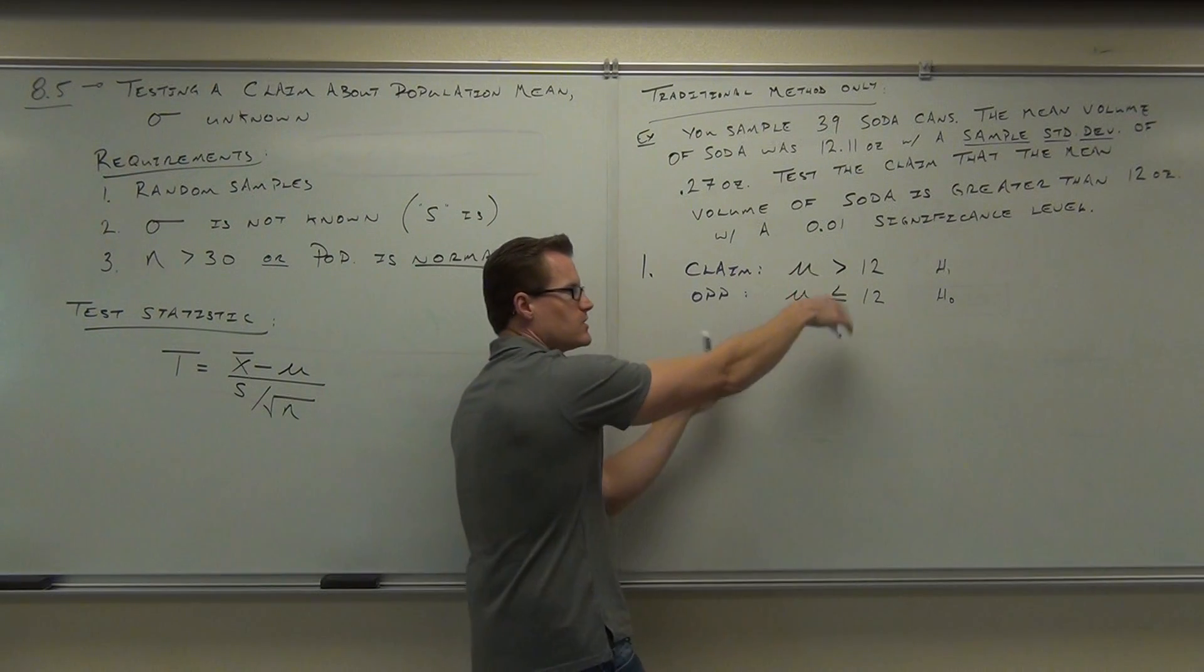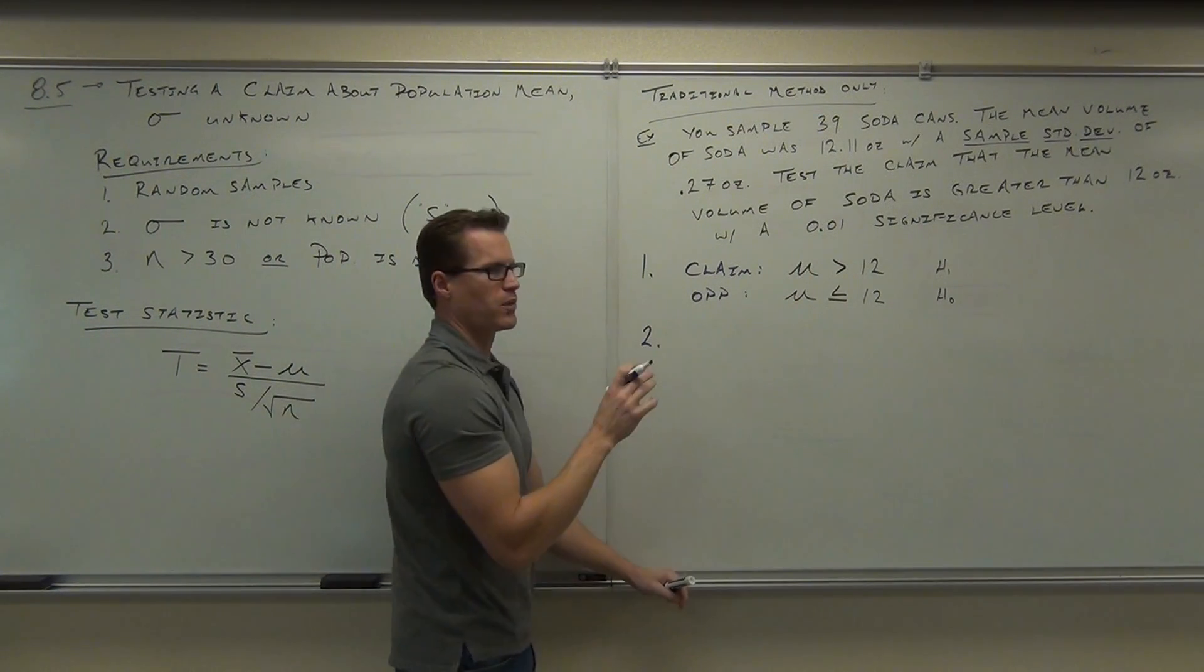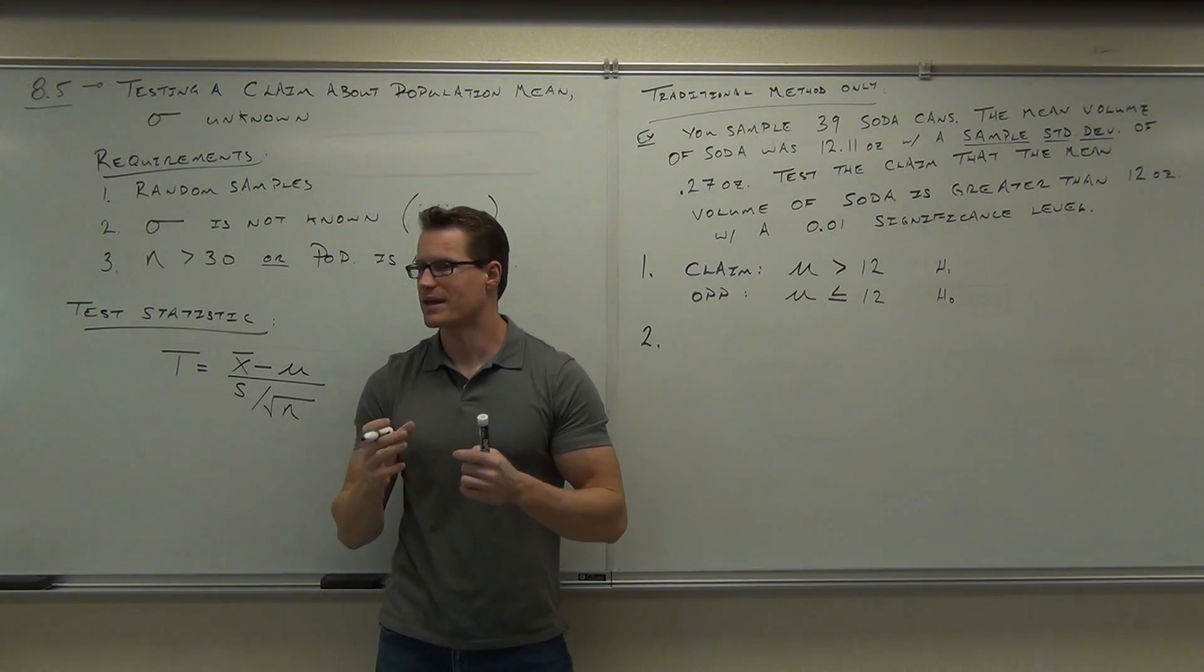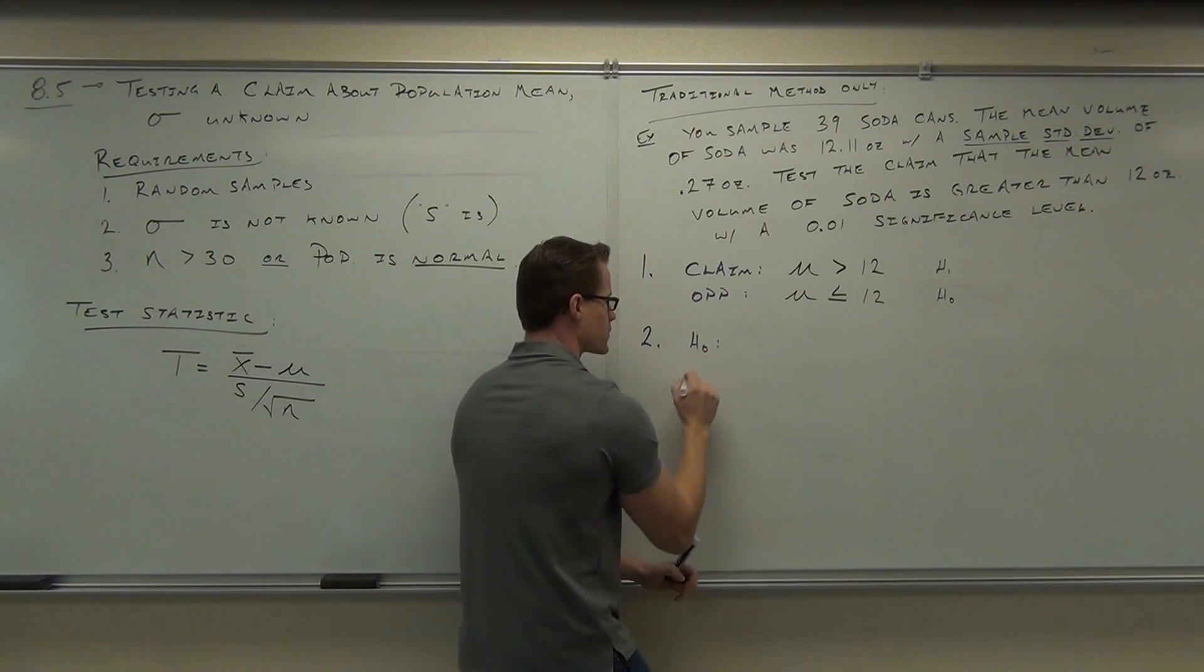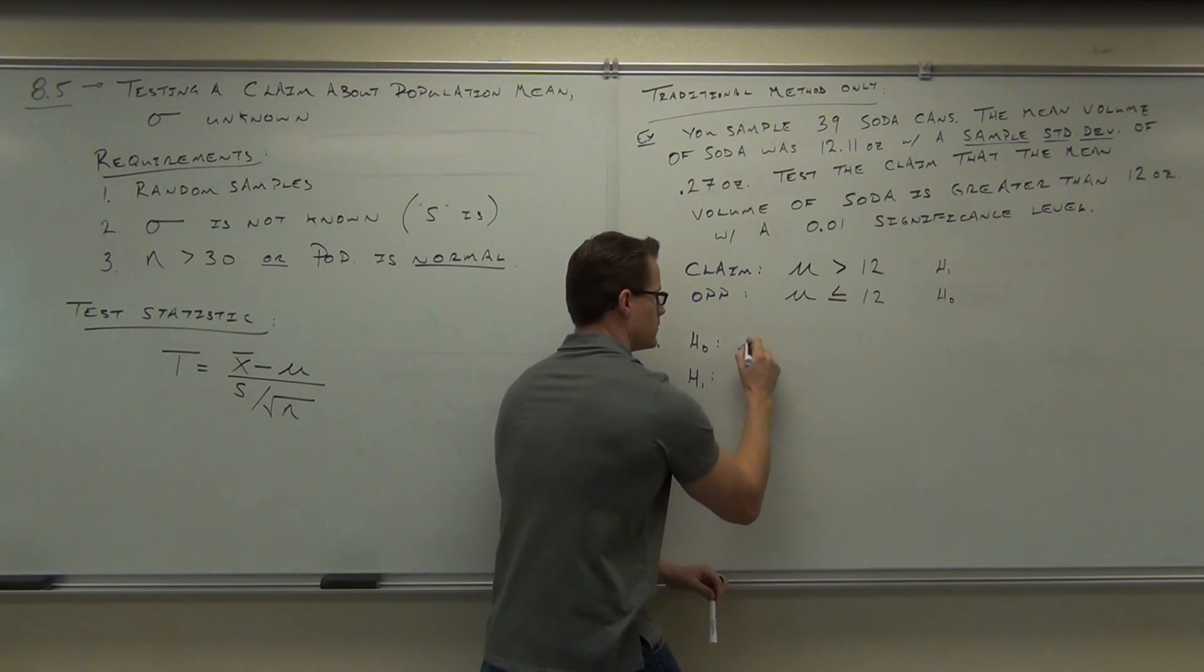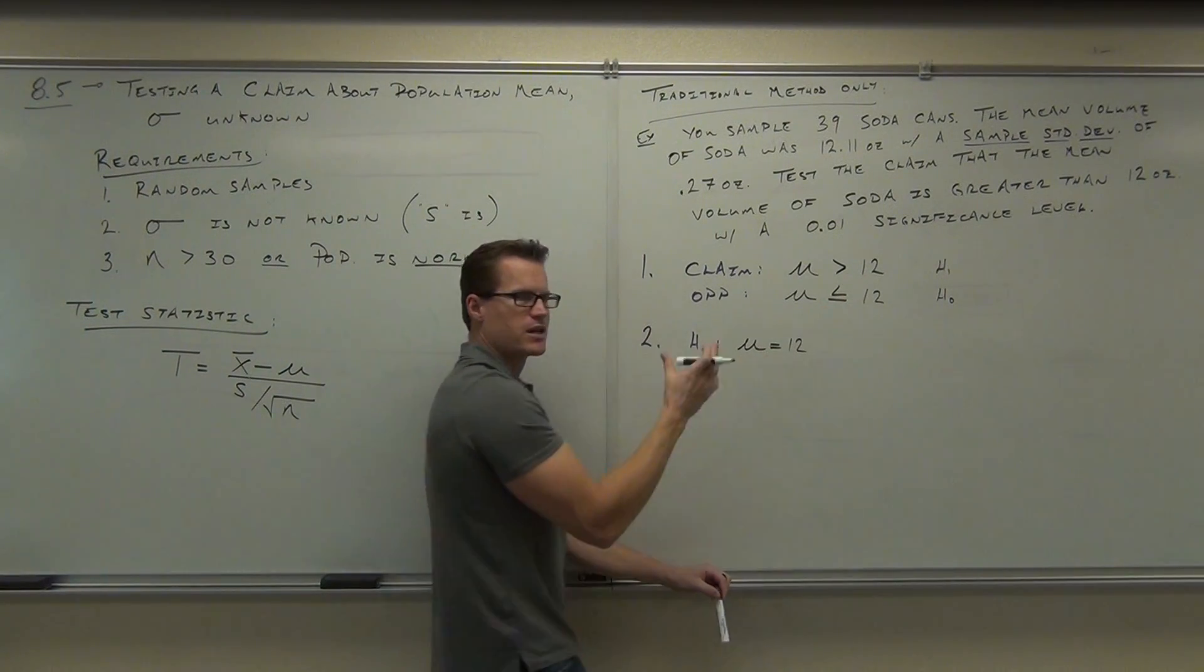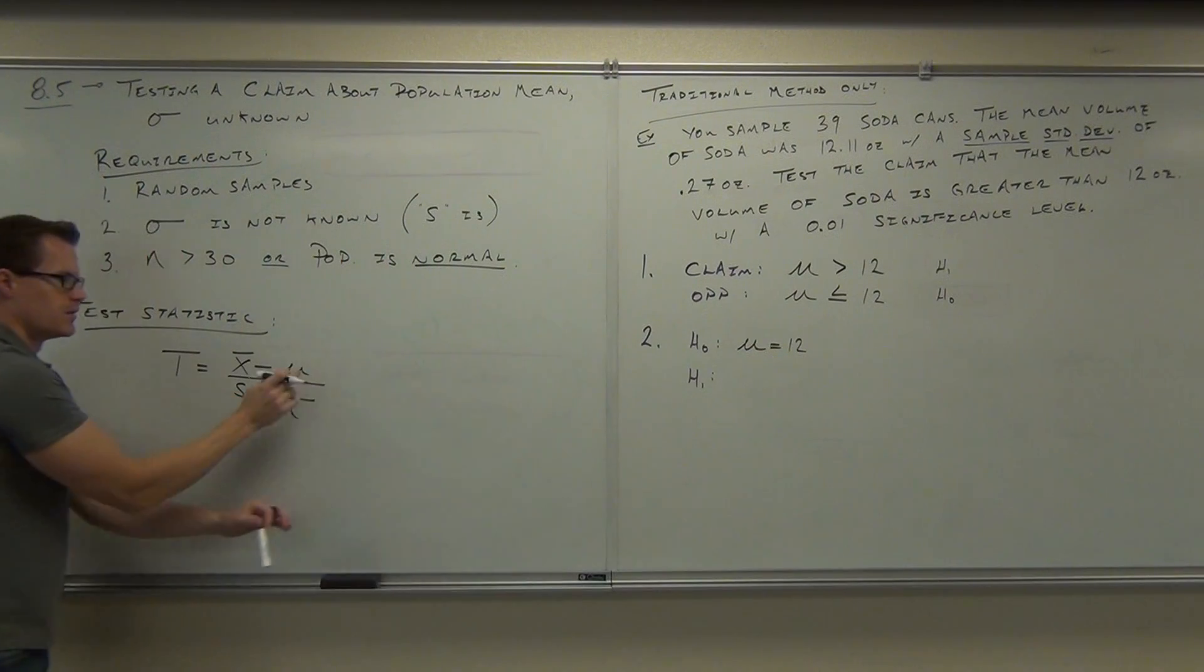Let's look at step number 2. It's basically just a restatement of these things. But it's important because we replace the less than or equal to with an equality and that gives us the information we need for our test statistic. We'll want our H sub 0 first. Then we'll want our H sub 1. H sub 0, tell me what I need to write. Meaning equals 12 ounces. Good. We replace this with an equal sign because our H sub 0 has to have an equals.